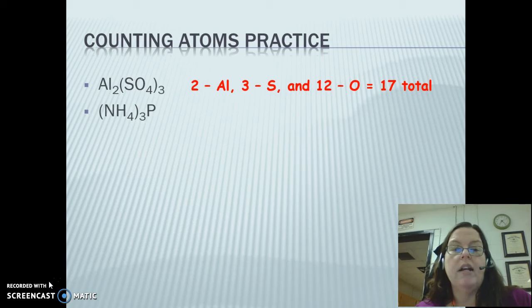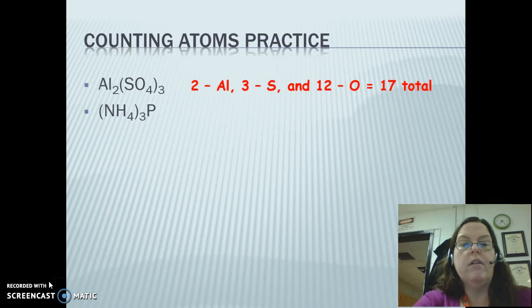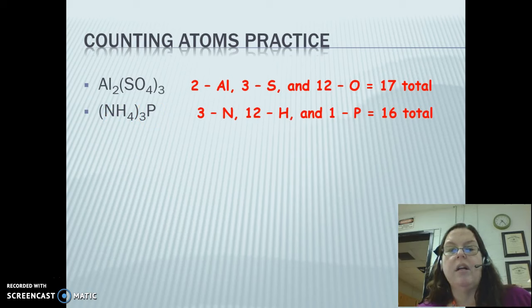How about here? NH₄₃P. Again, we have a three here, so our three tells us that we have three Ns, three times four means 12 Hs, and one P. So we have three Ns, 12 Hs, one P for a total of 16 atoms.